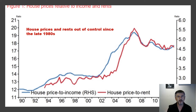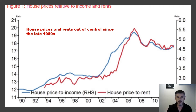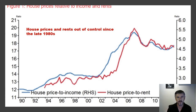Looking at house prices relative to income and rents: from the late 1980s, house prices and rents have gone out of control. This graph goes to about 2012, but if it extended to 2020, we know that houses and rents have largely become unaffordable for the average person on the average wage.